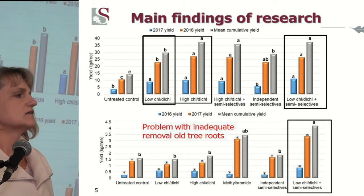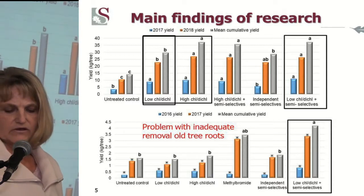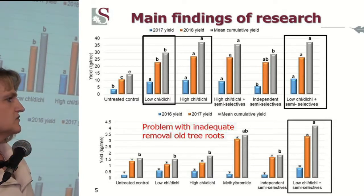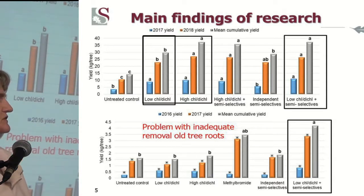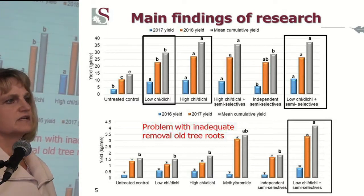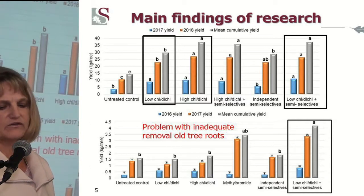In the third and last trial, we were actually not surprised that none of the fumigants actually significantly increased yield, and our best treatment was the low chloropicrin combined with the semi-selective. There was a good reason for seeing this, because the orchard was taken out and fumigated within the same year, and there were a lot of fresh roots left in the soil that served as a reservoir of the ARD organisms within the biological vacuum created by the fumigation.